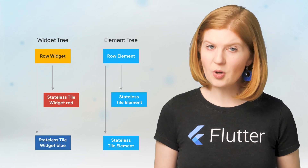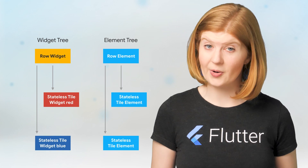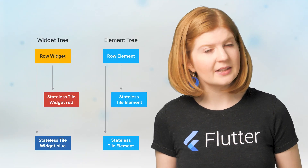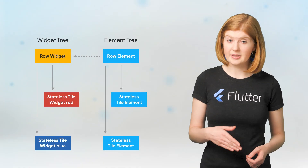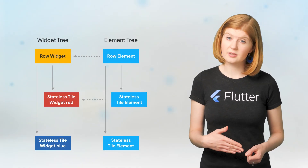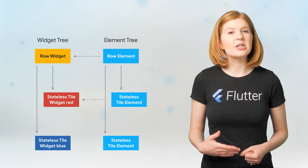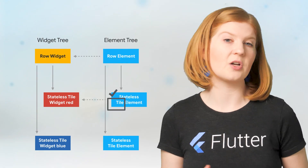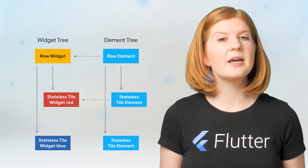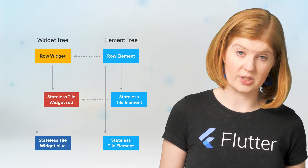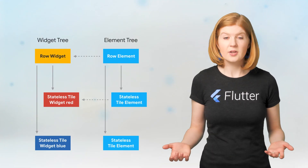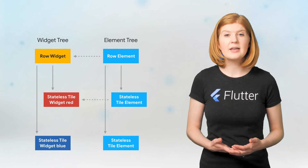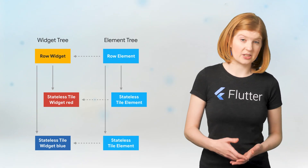When we swap the order of the tile widgets in the row, Flutter walks the element tree to see if the skeletal structure is the same. It starts with the row element and then moves to its children. The element tree checks that the new widget is the same type and key as the old one, and if so, updates its reference to the new widget. In this case, the widgets don't have keys, so Flutter just checks the type, and does the same for the second child.